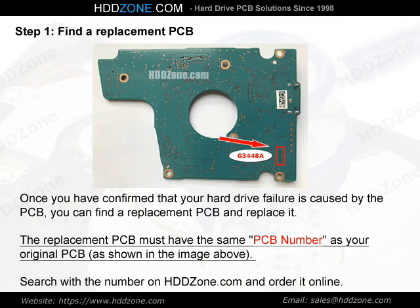Step 1: Find a Replacement PCB. Once you have confirmed that your hard drive failure is caused by the PCB, you can find a replacement PCB and replace it. The replacement PCB must have the same PCB number as your original PCB, as shown in the image above. Search with the number on HDDZone.com and order it online.